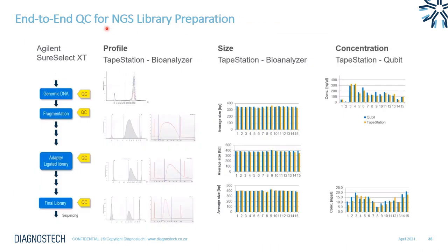To wrap up, the TapeStation is really an end-to-end QC platform. It can measure input genomic DNA going into the assay, assess fragmentation as you work through the workflow, evaluate adapter ligation efficiency by looking at the size shift on the electropherogram as well as the presence of any adapter dimers, and finally for the final library — vital to QC before sequencing — it measures size and provides the average fragment size for molarity calculations. Although the Qubit is still recommended for double-stranded DNA quantification, you are able to get quite similar values off the TapeStation, making it a one-assay-for-all approach.